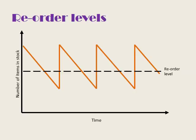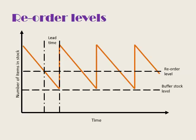We will set a reorder level, and this will be a little bit higher than the minimum stock that we like to hold. When we place an order there will typically be an amount of time where we are issuing stock but we still have yet to receive the new delivery of stock — and that's the lead time. We'll also have the buffer stock level, which is the amount of stock that we hold that we don't expect to use.